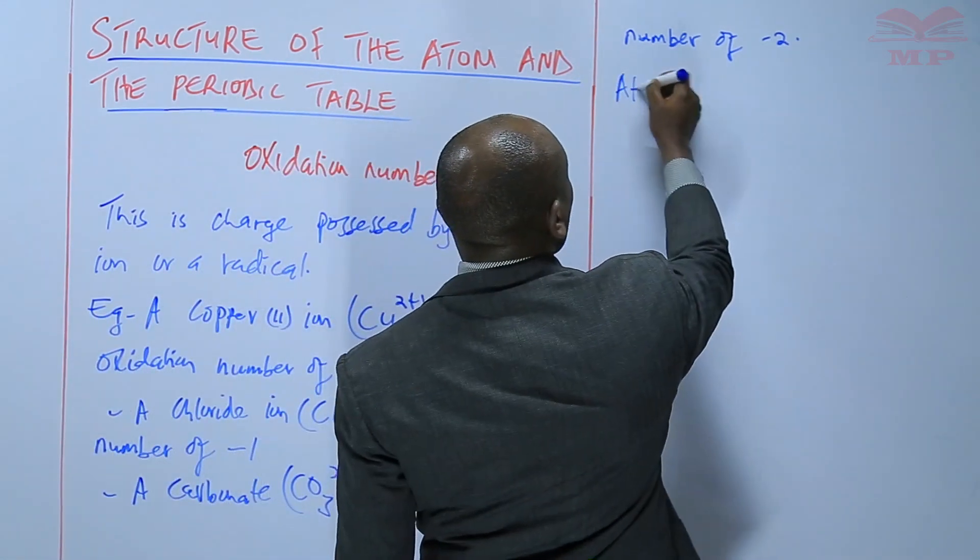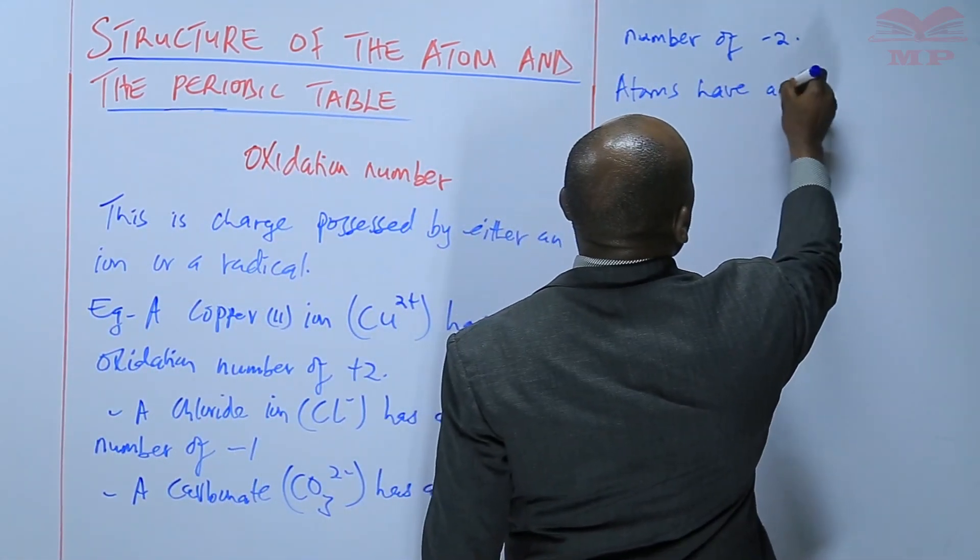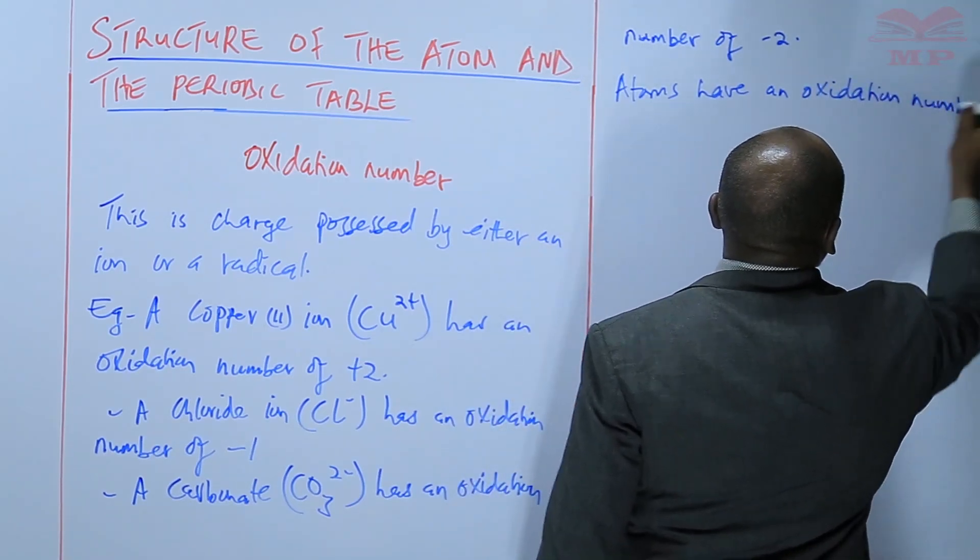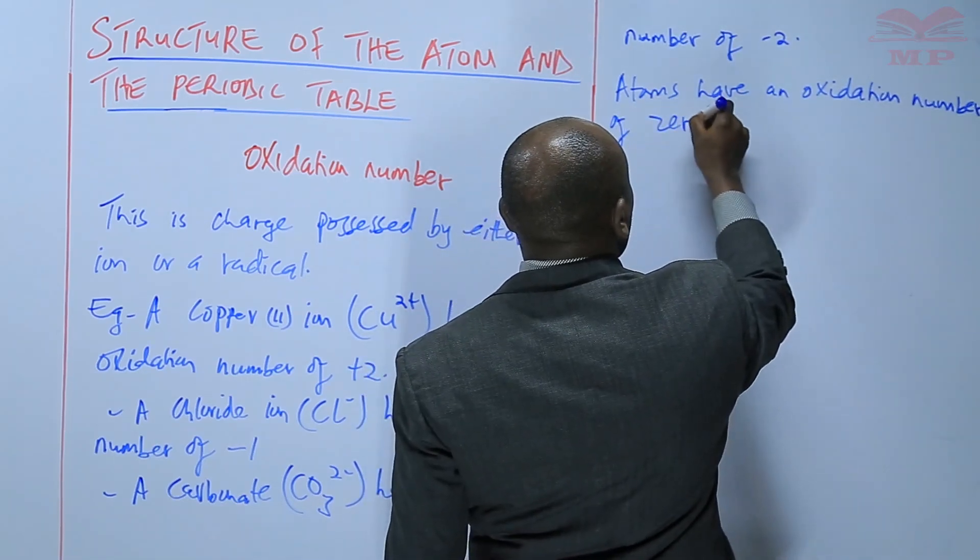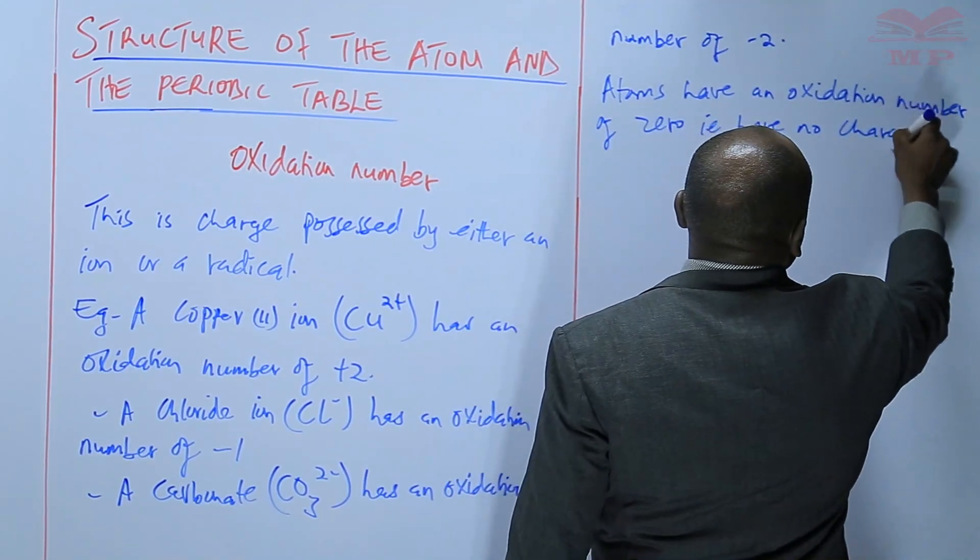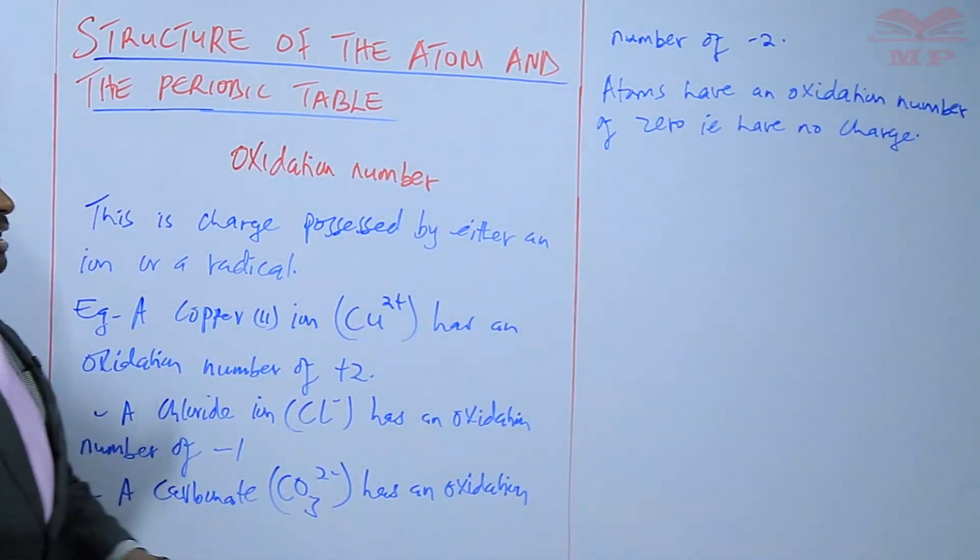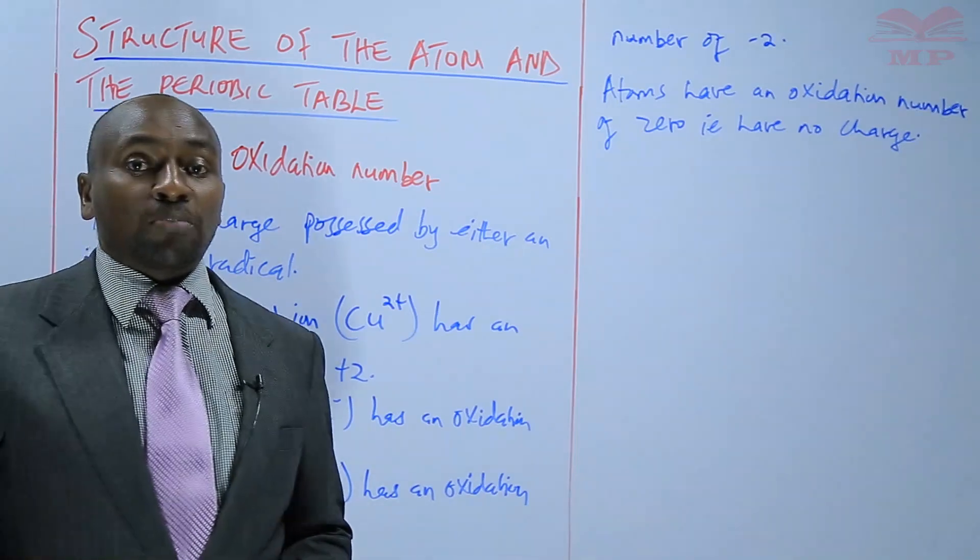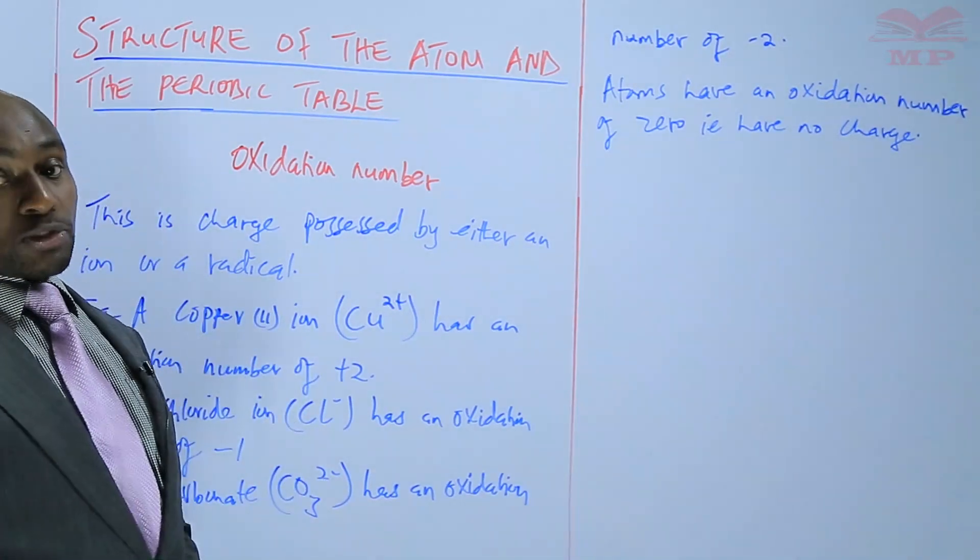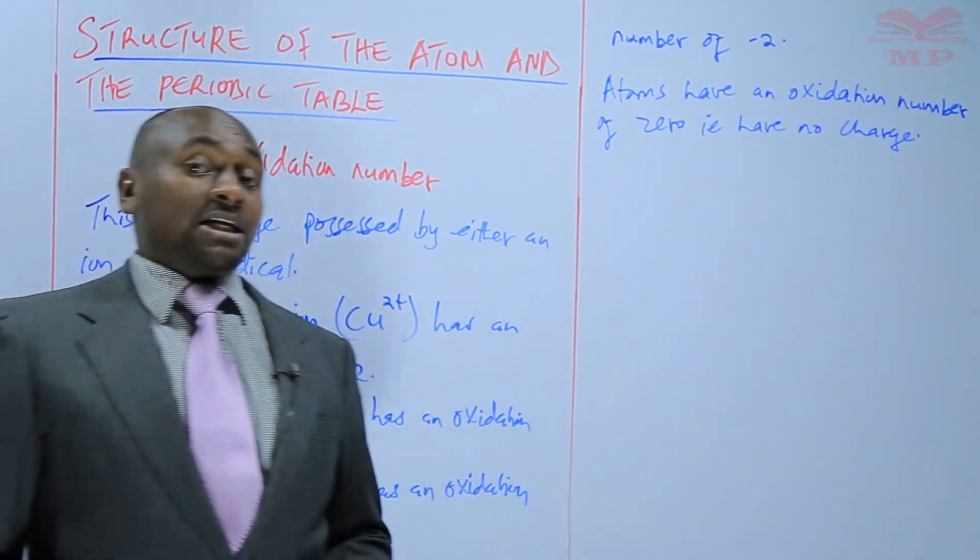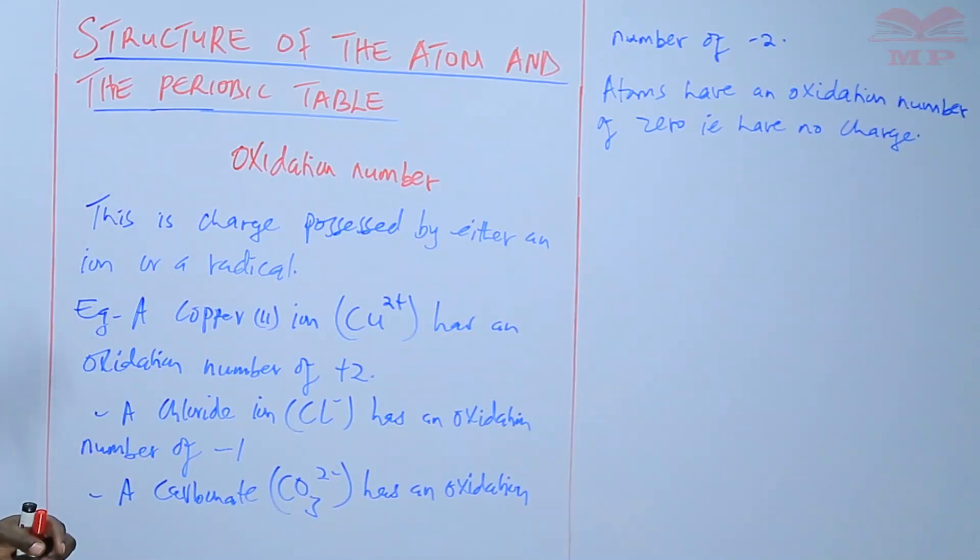Atoms have an oxidation number of 0. So they have no charge. And of course, we discussed that earlier in the topic, whereby we say that the reason why atoms have no charge is because the number of protons is always equal to the number of electrons. The number of positive charges is always equal to the number of negative charges. So in this case, the oxidation number is only found in ions and radicals.